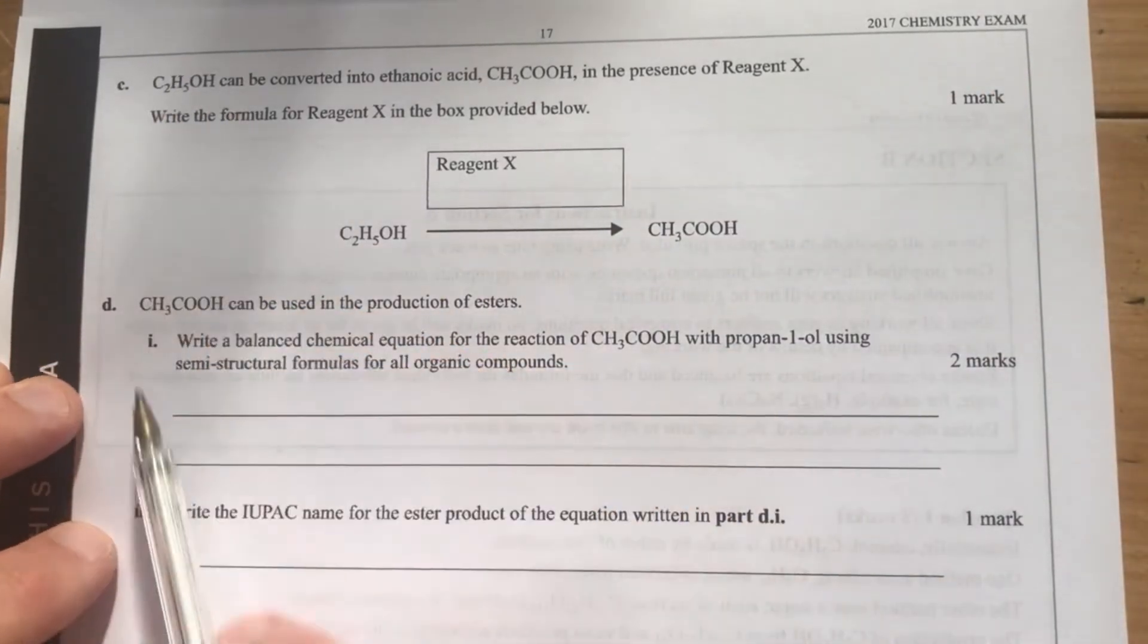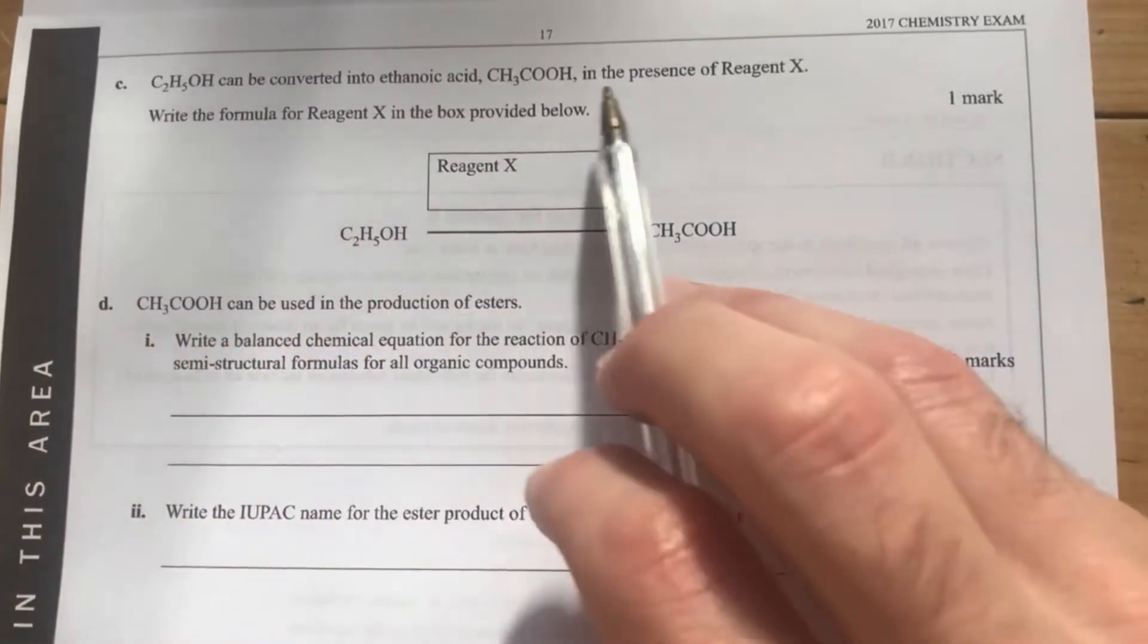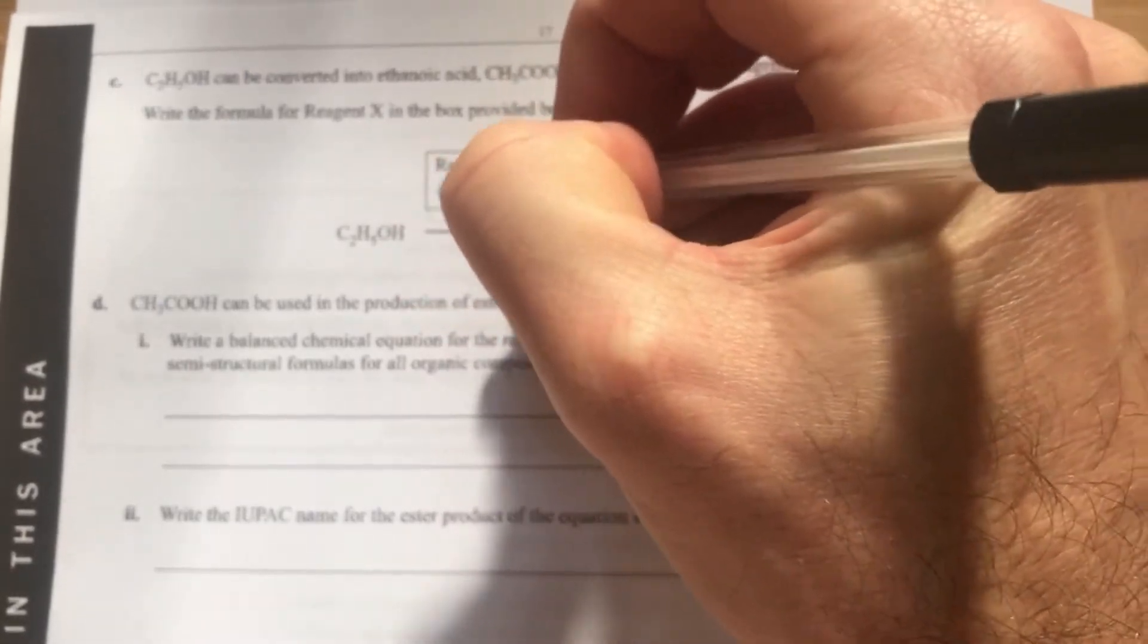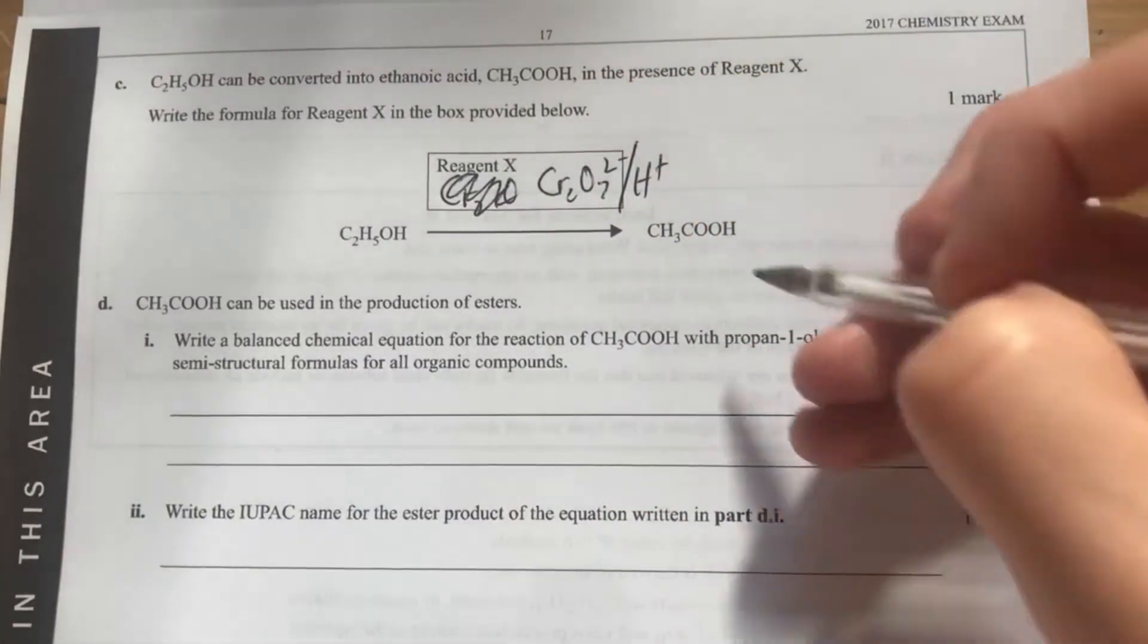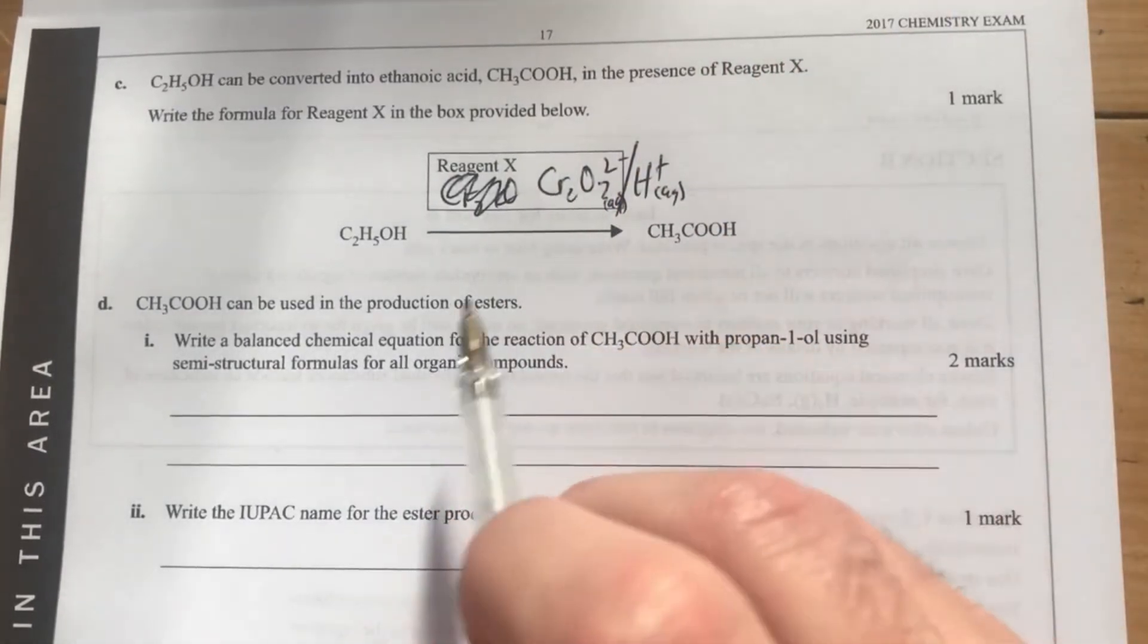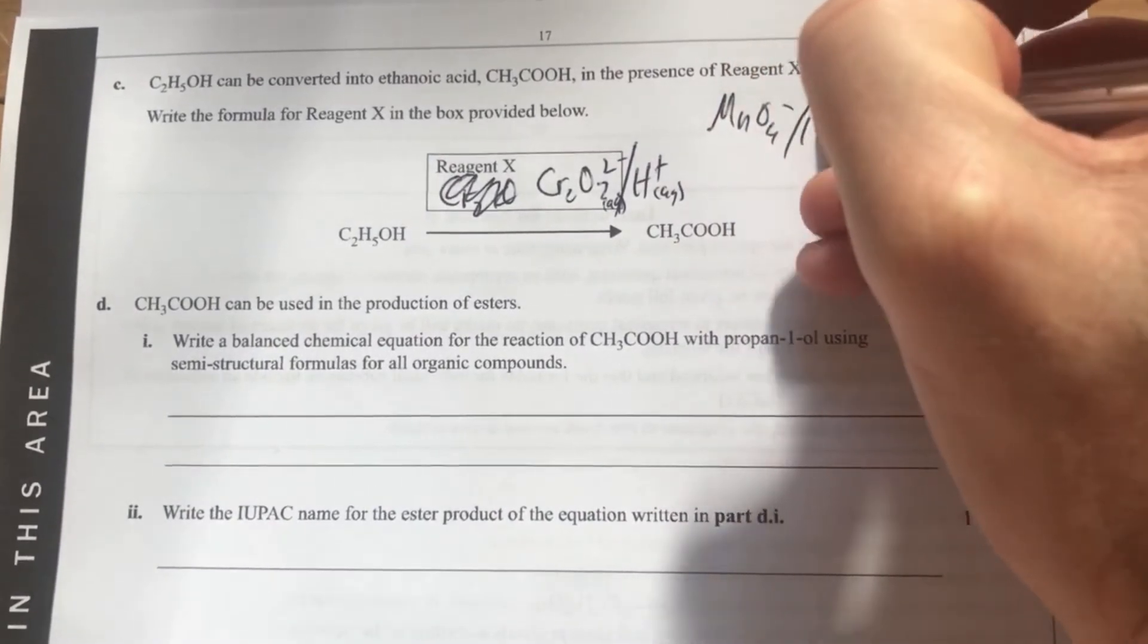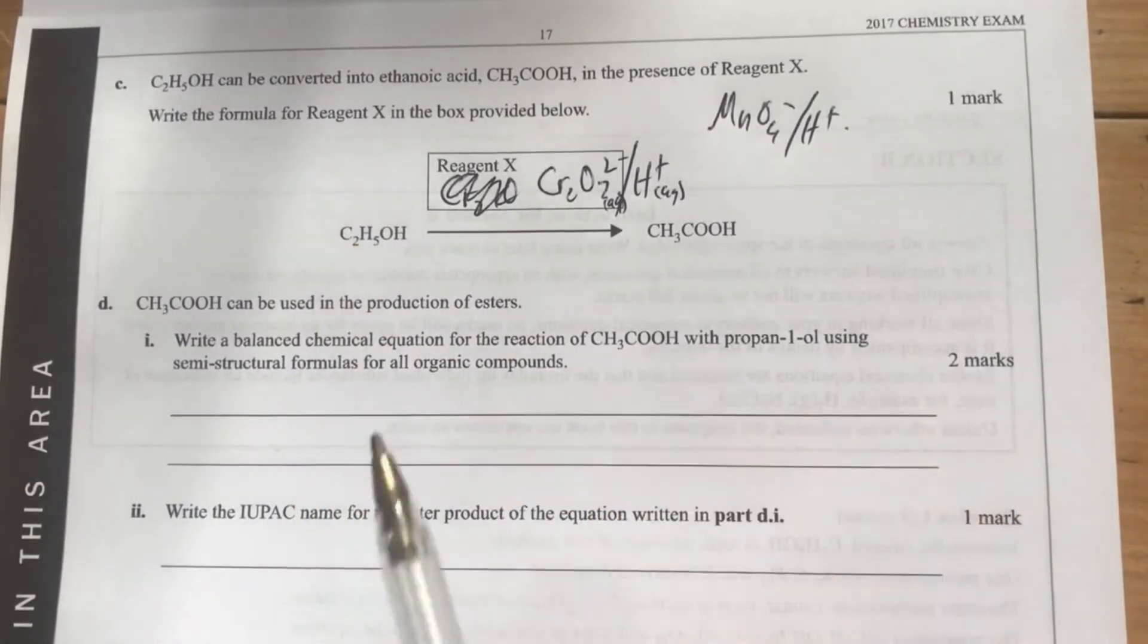Moving on across the page, we've got two more sections. The ethanol can be converted into ethanoic acid by reagent X. This is a good one that you should know from your reaction pathways. We're looking at dichromate, Cr2O7 2-, in an acidic environment. This should be aqueous for our states and reagents. You could also use MnO4- and H+ as well. That would be a reasonable reagent to convert the ethanol into ethanoic acid.